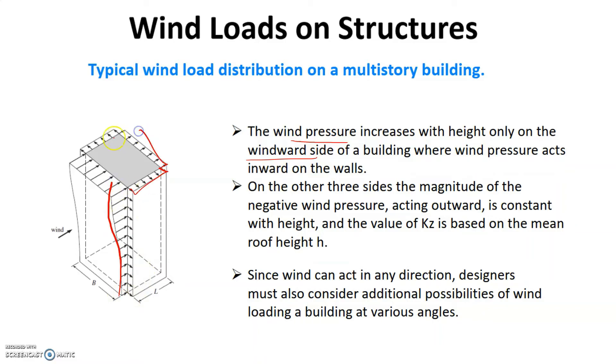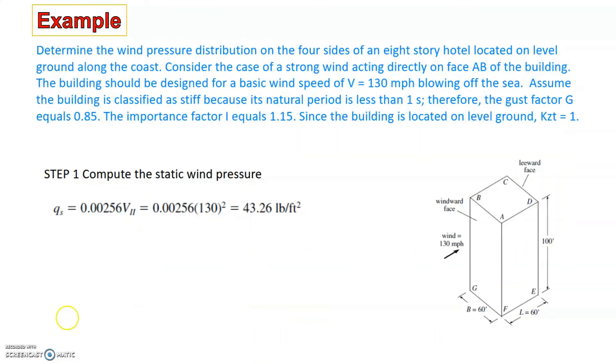Now let's look at an example to calculate the equivalent static loads corresponding to some wind conditions on a particular structure of height 100 feet and width and length being 60 by 60 feet. The question is to determine the wind pressure distribution on four sides of an 8-story hotel located on level ground, which means that KZT is equal to 1.